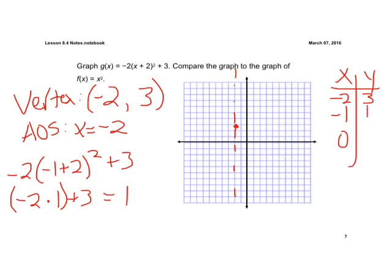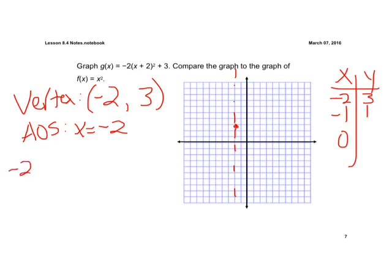All right, now plug in 0. I'm just going to get rid of this so we have a little more room. If we plug in 0 to our equation, we have negative 2 times 0 plus 2 squared plus 3. 0 plus 2, parentheses first, is 2. 2 squared is 4. So we're left with negative 2 times 4 plus 3. Well, negative 2 times 4 is negative 8. Negative 8 plus 3 is going to be a negative 5.